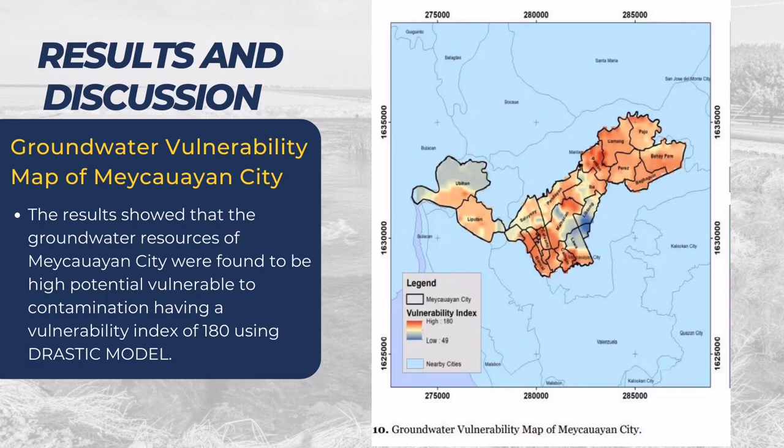Finally, tracing the gradient red as presented in the legend, the result showed that the groundwater resources of Meikawayan City were found to be high potential vulnerable to contamination, having a vulnerability index of 180 using the DRASTIC model.